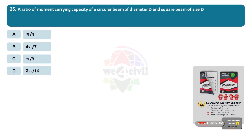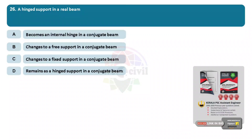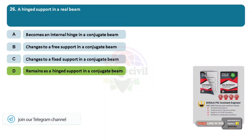Question 25: The ratio of moment carrying capacity of a circular beam of diameter D and square beam of size D is? Options: A, π/4. B, 4π/7. C, π/3. D, 3π/16. Answer: Option D, 3π/16. Question 26: A hinge support in a real beam. Options: A, becomes an internal hinge in a conjugate beam. Option B, changes to a free support in a conjugate beam. Option C, changes to a fixed support in a conjugate beam. Option D, remains as a hinge support in a conjugate beam. Answer: Option D, remains as a hinge support in a conjugate beam.